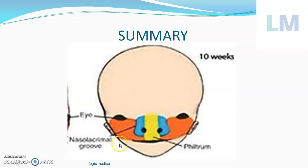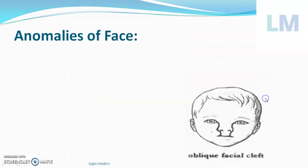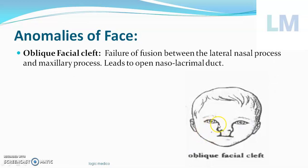Coming to the last topic — anomalies of the development of the face. What if there is a cleft obliquely in the face? We call it an oblique facial cleft. Why does it happen? Failure of fusion of the maxillary process with the lateral nasal process results in a cleft that is obliquely oriented. Here, the nasolacrimal duct is exposed to the exterior.